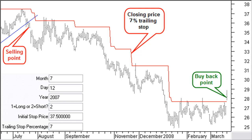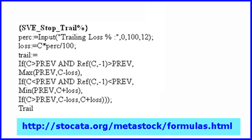I will give you next the formula that will help you find the appropriate percentage for a certain stock during a certain period. This formula can be found at stoccata.org/metastock/formulas.html. This is a percentage trailing stop formula that switches from a long to a short or from a short to a long position automatically when the running trailing stop is broken. Changing the percentage will give you a good idea of which value gives you the required result on historical data. You would then use this percentage for future data.